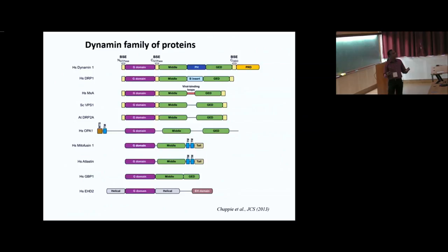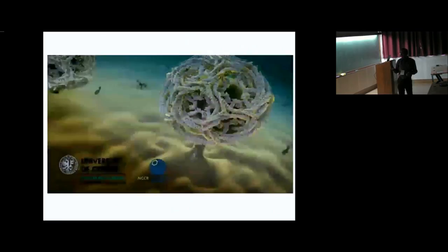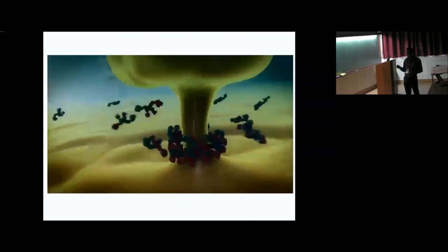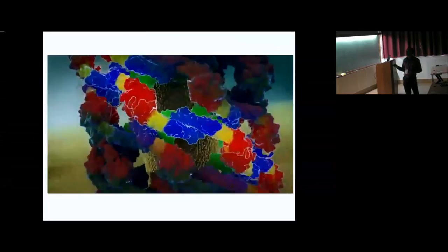For classical dynamin in endocytosis: dynamin dimers associate in a helical collar at the neck of clathrin-coated pits. Upon GTP hydrolysis, dynamin undergoes a conformational change leading to torsion and constriction of the helix. Fission happens at the edge of the dynamin coat where membrane stress is the largest. The protein components then disassemble to be recycled.